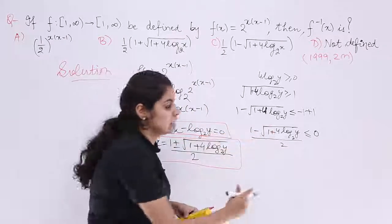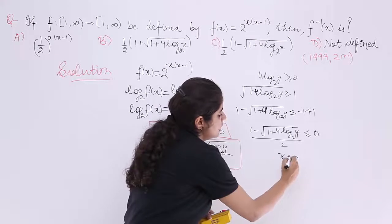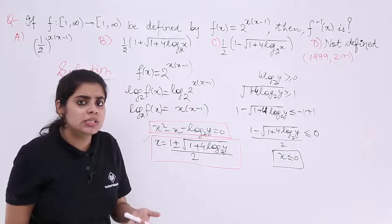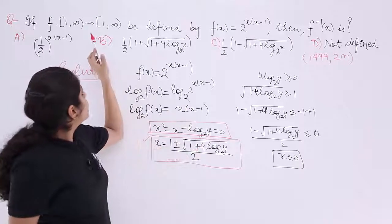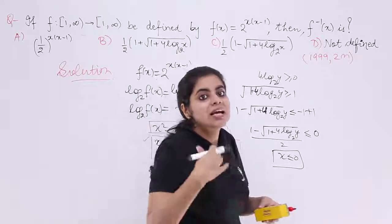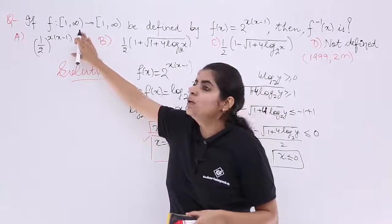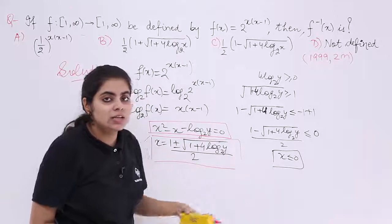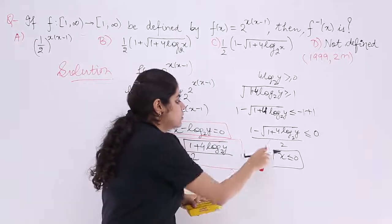But if x is less than equal to 0, is it possible? You see the question. The question has 1 to infinity as the domain. That means, x has to be greater than equal to 1 and not less than equal to 0. So this means, this case does not exist. So this is not possible. So we put a cross.